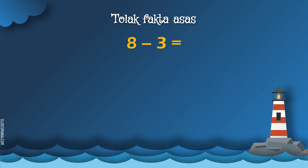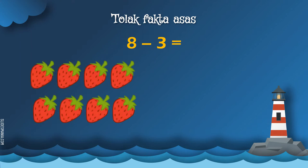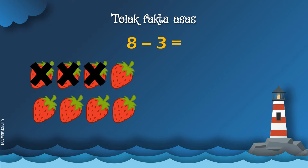Tengok contoh: 8 tolak 3 sama dengan... Macam mana nak buat? Sekarang, Cikgu ada 8 biji stroberi. Cikgu perlu buangkan 3 — 1, 2, 3. Jadi berapa lagi stroberi yang tinggal? Kita kira sama-sama: 1, 2, 3, 4, 5. Jadi, 5 biji stroberi yang tinggal.